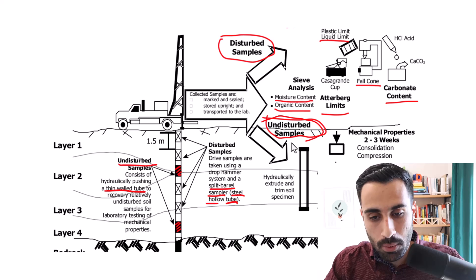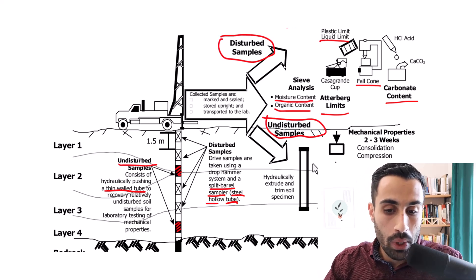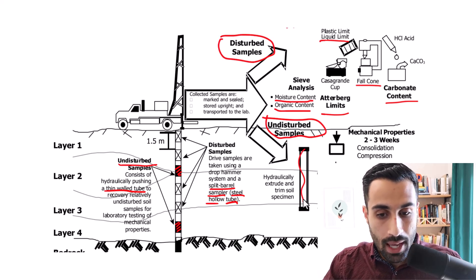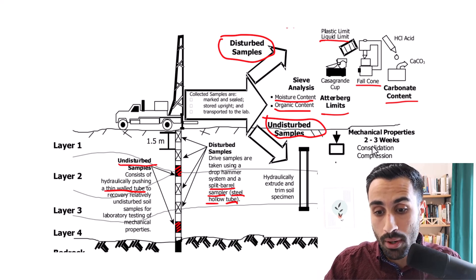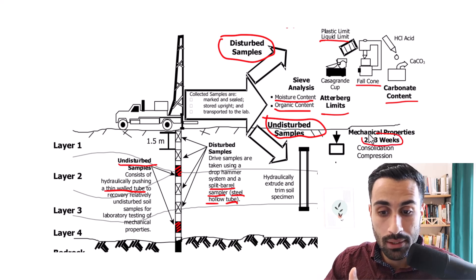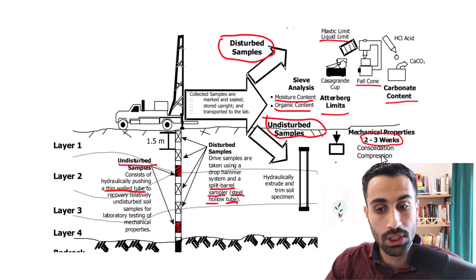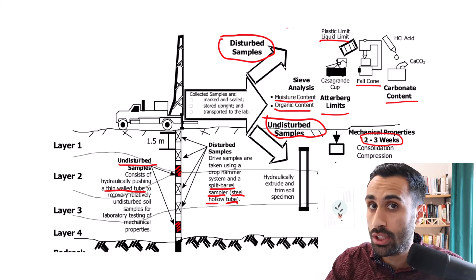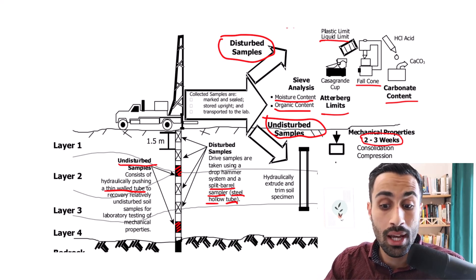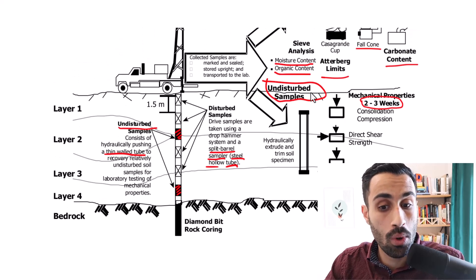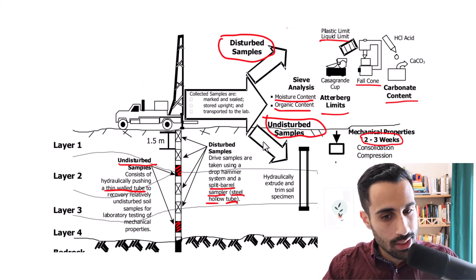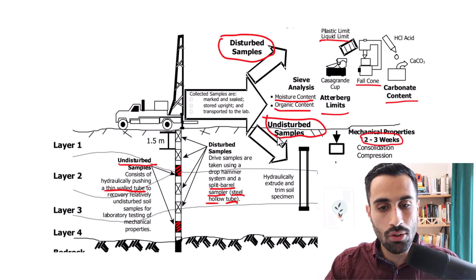Then for the undisturbed samples, looking at these, we get the tube and then we take it out and we do that important strength consolidation type of properties. So this is two to three weeks and we have the consolidation compression, unconfined compression test, consolidation test. We can do the direct shear strength to get the cohesion value, to get the internal friction angle of the soil. And we can do that very important triaxial test for undisturbed samples. So this is basically it. That's all we need to know for this.